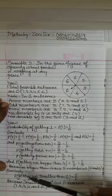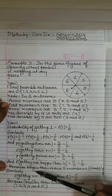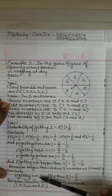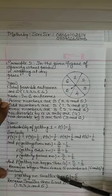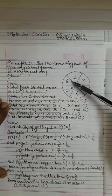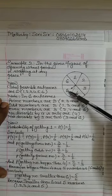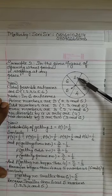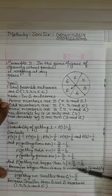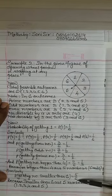Probability of a number bigger than four: there are two numbers bigger than four — five and six — so two by six equals one by three. Probability of getting a number smaller than six: five numbers are smaller than six, so probability is five by six.